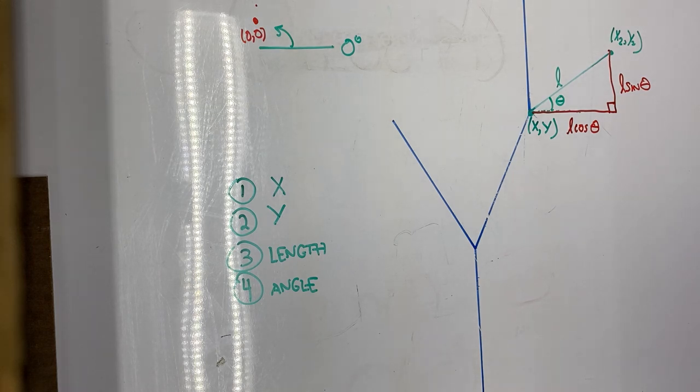Try different values with these, try different scaling factors for the length, try different branch angles, and get a sense of the different types of trees you can generate with that.